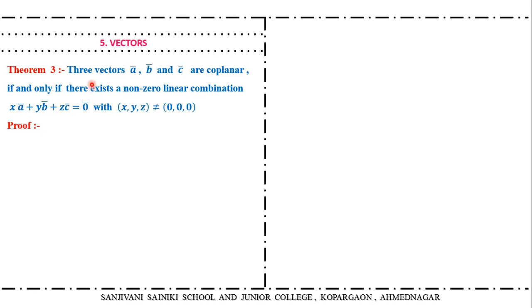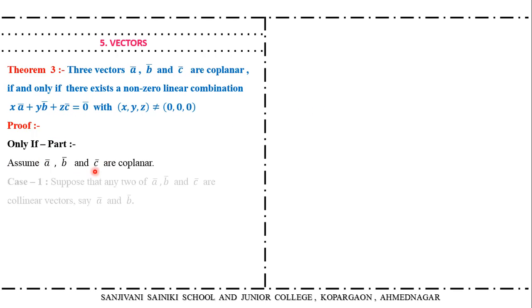Now the third theorem: three vectors A bar, B bar, and C bar are coplanar if and only if there exists a non-zero linear combination of them equal to zero — that is, at least one scalar must be nonzero such that their linear combination is zero. As a supposition, assume A bar, B bar, C bar are coplanar. If they are coplanar, one of the vectors can be expressed as a linear combination of the remaining two.